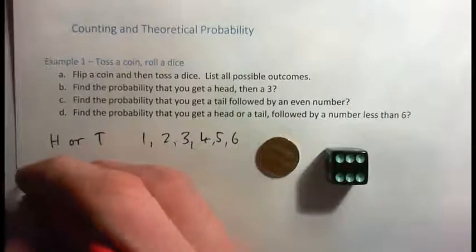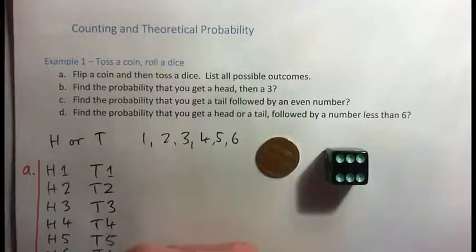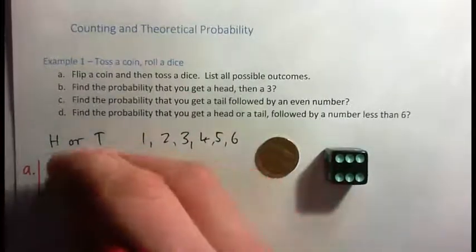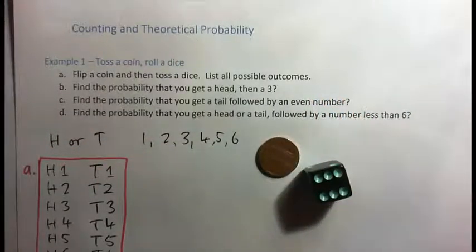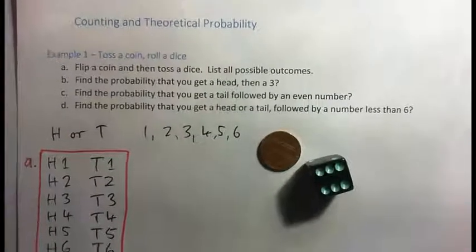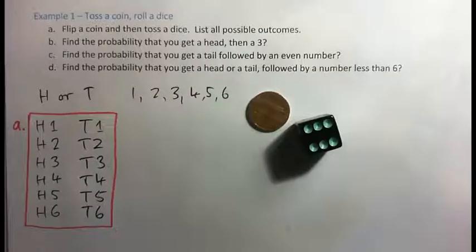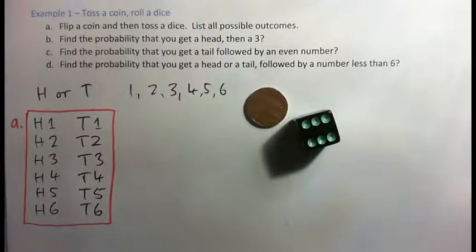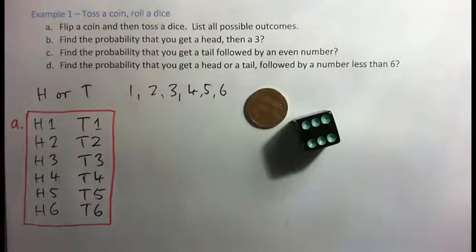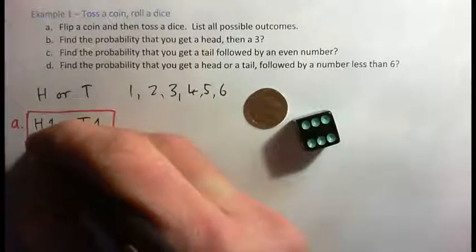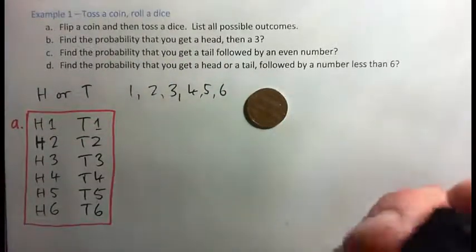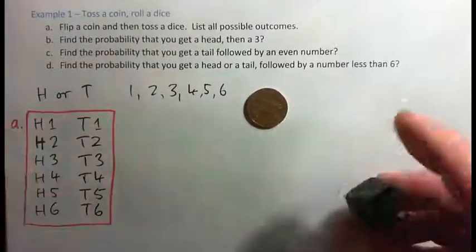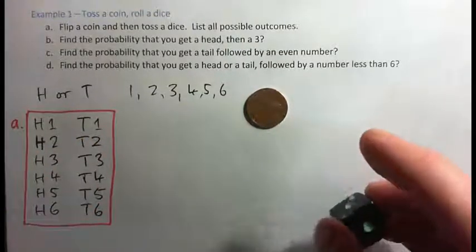These are all possible outcomes for tossing a coin and then rolling a dice. How many outcomes do we have? We've got 12 possible outcomes — assuming the dice is evenly weighted on each side, which we'll assume it is.